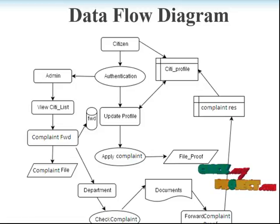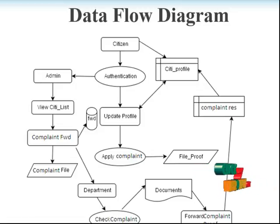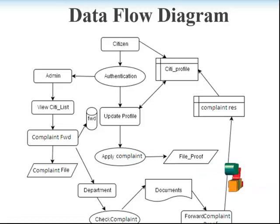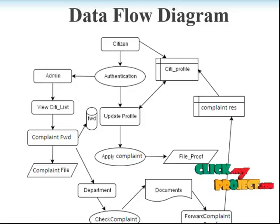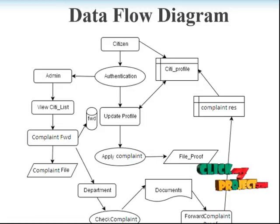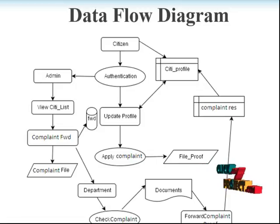Another process is admin. Admin goes to view citizen list, then complaint forward, complaint file. Another process involves citizen profile — citizen profile is considered for the complaint result for the department, then check complaint, then documents forward, and complaint proof to complaint registration. That's all.